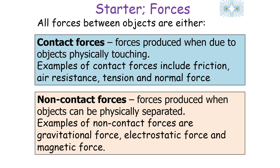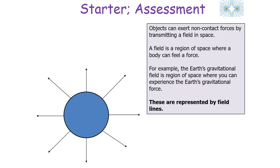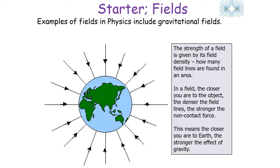Objects can either experience contact forces, which are forces produced when objects are physically touching, or non-contact forces, which are forces produced when objects are physically separated. Objects can exert non-contact forces by transmitting a field in space. A field is a region of space where a body can feel a force. The strength of a field is given by its field density — how many field lines are found in an area — so the closer you are to an object the denser the field lines and the stronger the force.